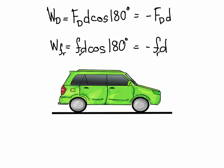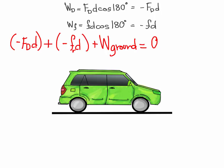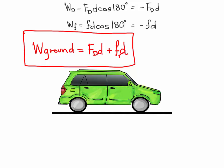After we solve for the work of the drag and the friction force, we get negative drag work and negative friction work. We can plug that back into our non-conservative force work equation. When we solve for W ground, this is our final equation.